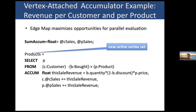Here would be the syntax in case we wanted to generate a new set of active vertices: we would just select P — P was the product — and all of them would be put together into a set called "products". That allows us to chain select-from-accum blocks, because the next block can refer to "products" just like it previously referred to the type of customer vertices.